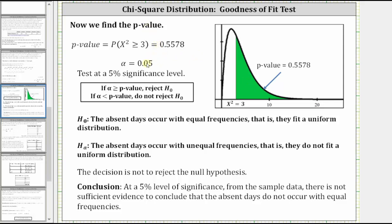And now comparing the p-value to alpha, notice how the p-value is high and therefore the null must fly, or more formally, because the p-value is greater than alpha or because alpha is less than the p-value, we do not reject the null hypothesis, where remember the null hypothesis is the absent days occur with equal frequencies, that is, they fit a uniform distribution. So because we do not reject the null hypothesis, our final conclusion is,